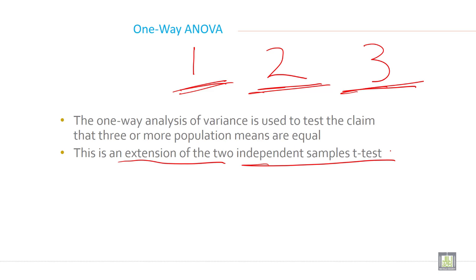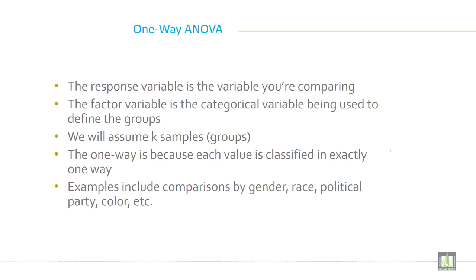The response variable is the variable you are comparing. The factor variable is the categorical variable being used to define the groups.